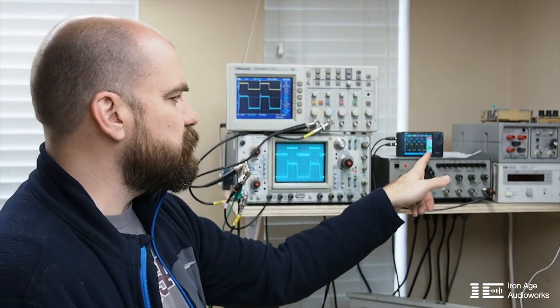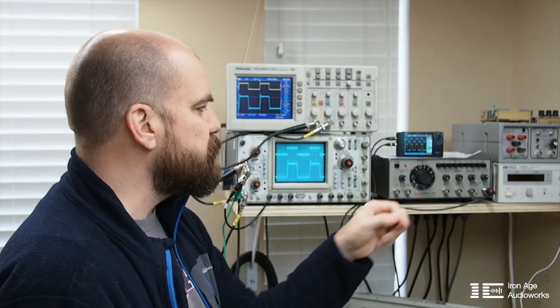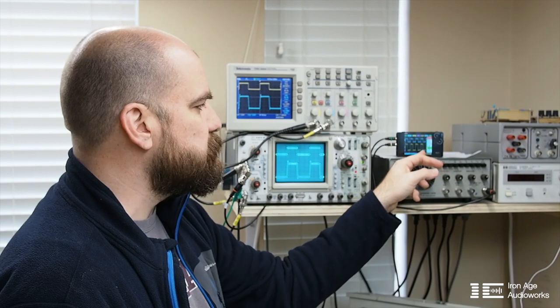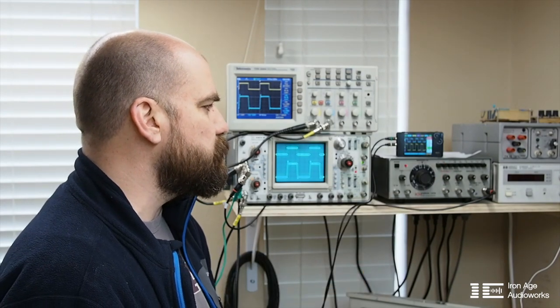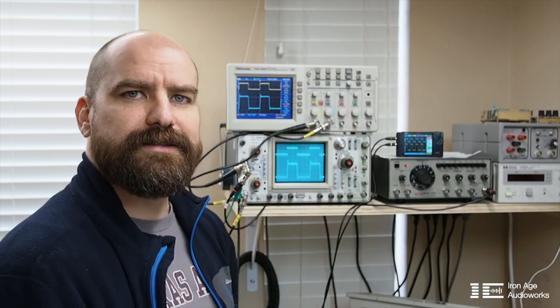And then finally this little digital oscilloscope here that I got as a gift for Christmas, has some really nice features and it's really affordable. You can get them on Amazon. So let's see what it looks like.